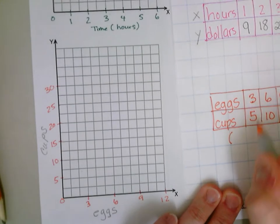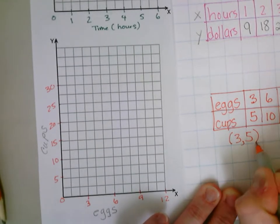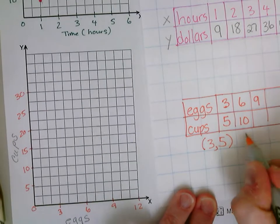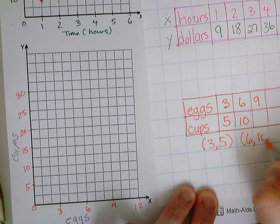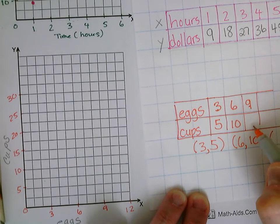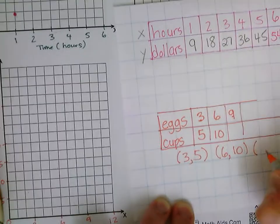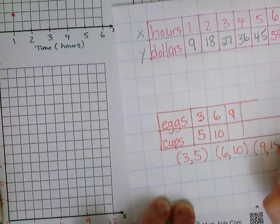My first ordered pair—I'm going to make ordered pairs from my ratios. My first ordered pair would be three comma five. My next ordered pair would be six comma ten. And my last ordered pair would be nine comma—what do you think would go here? These are counting by fives, these are counting by threes. Nine comma, that's right, fifteen.